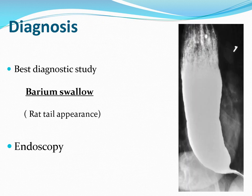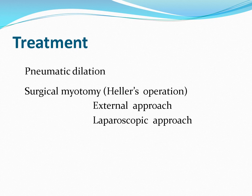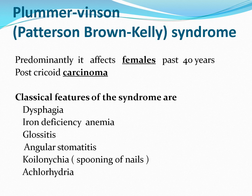Diagnosis of achalasia cardia is made by barium swallow, which shows a rat-tail appearance or bird-beak appearance — a dilated esophagus narrowing at the cardiac end. Endoscopy is done to rule out malignancy and take biopsy from suspicious areas. Treatment is pneumatic dilatation, or surgical myotomy called the Heller operation, where we cut the outer layers of the cardiac end leaving behind the mucosal layer, via external, laparoscopic, or endoscopic approach.